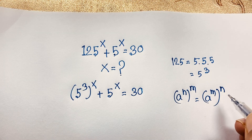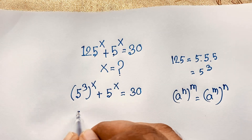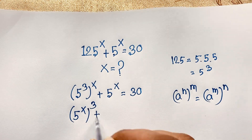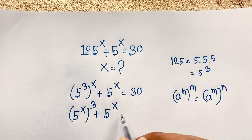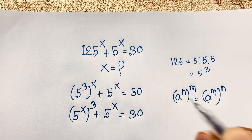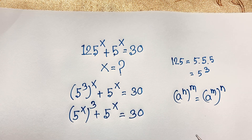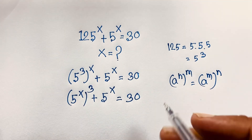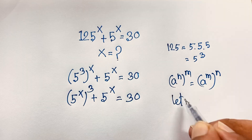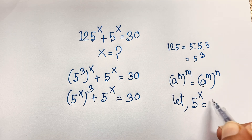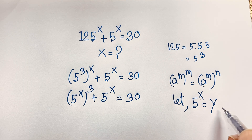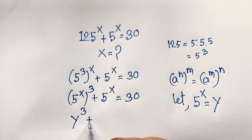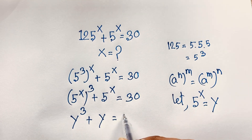So if I apply this math formula here, it will be 5 to the power x, whole to the power 3, plus 5 to the power x, is equal to 30. Now here we have 5 to the power x and 5 to the power x, so let 5 to the power x equal y. So y to the power 3 plus y is equal to 30.